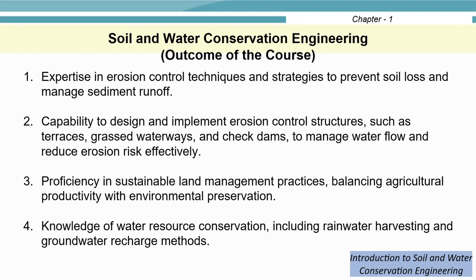What are the major outcomes of the Soil and Water Conservation Engineering course? First, you will gain expertise in erosion control techniques and strategies to prevent soil loss and manage sediment runoff. You will have the capability to design and implement erosion control structures such as terraces, grass waterways, and check dams to manage water flow and reduce erosion risk. You will acquire proficiency in sustainable land management practices, balancing agricultural productivity with environmental preservation, and gain knowledge of water resource conservation including rainwater harvesting and groundwater recharge methods.